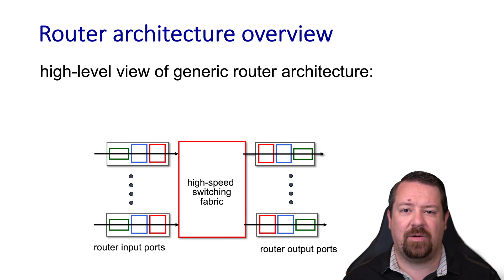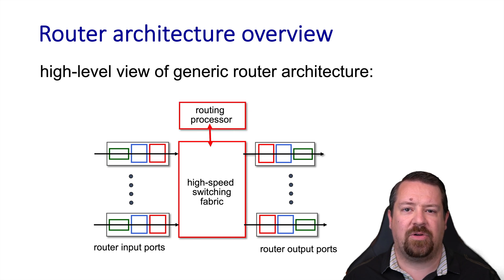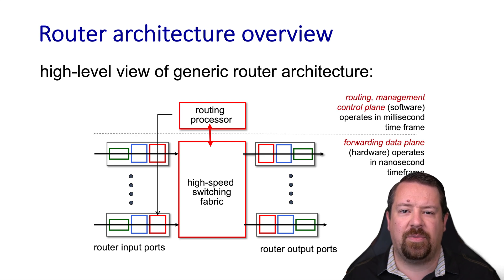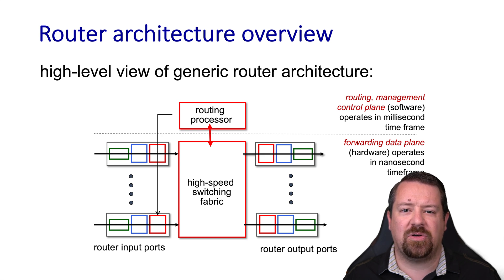Note that physically, a port on a router is most likely both an input and output port, but for understanding the logic of their operations we'll discuss input ports separately from output ports. As mentioned in the last video, there's also a routing processor which handles the control plane functionality of a traditional router. The routing processor provides information to each of the input ports so that forwarding decisions may be made appropriately.